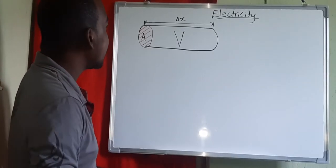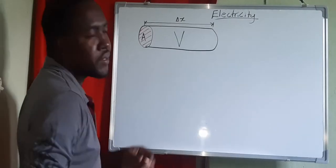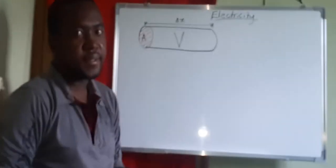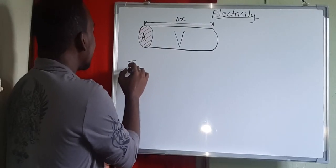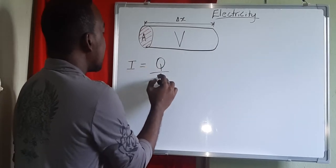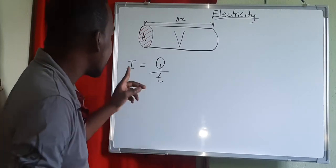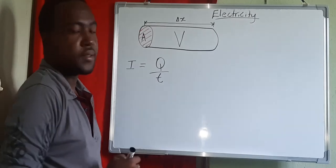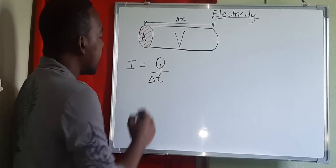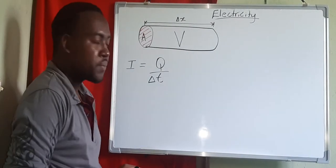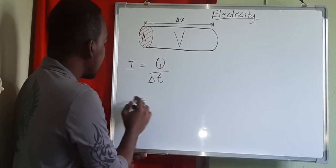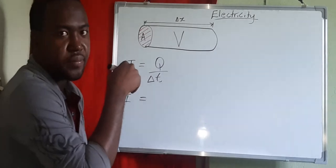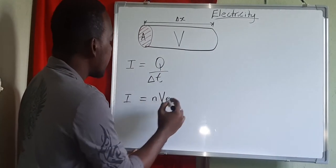Starting with a simple diagram of a cylindrical conductor with cross-sectional area A, volume V, and length delta X. Current I passes through this conductor. We know Q equals IT, so I equals Q over delta T — the amount of charge passing per unit time. Q, the amount of charge, is given by N times V times E.